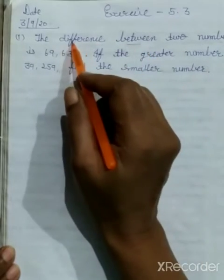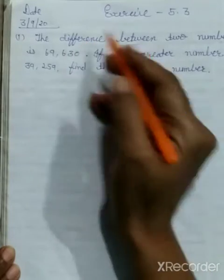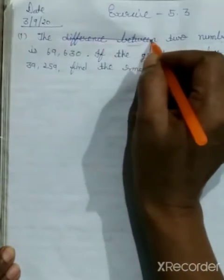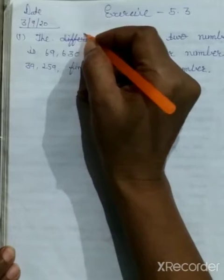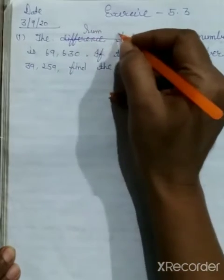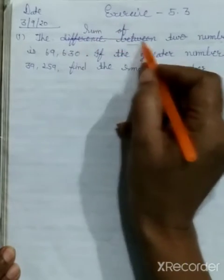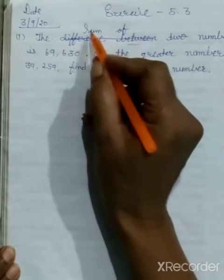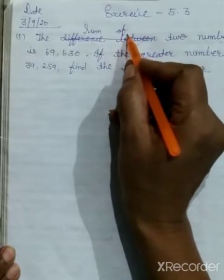Now you see, in your book it says difference between. Cut this and what you need to write here is the sum of. This is wrong, you need to write sum of.